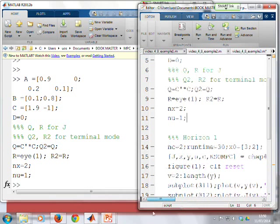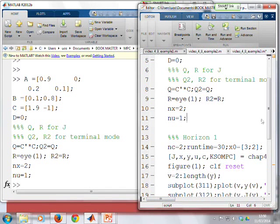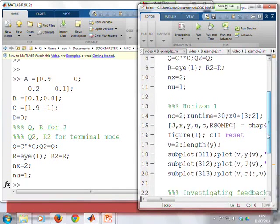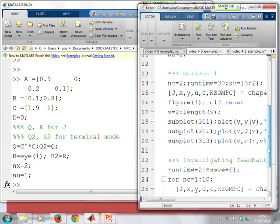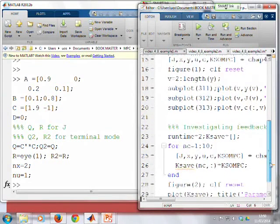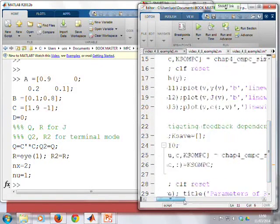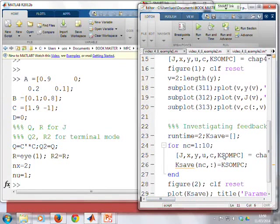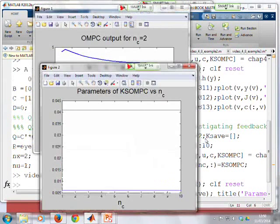We can use that file to run our SOMPC controller. So we do that for various values of NC, and we'll plot the figures in a minute. We also can use a similar piece of code to extract the compensator KSOMPC. Then figure 2 will plot the parameters of these. So if I run this whole file, we get two figures.